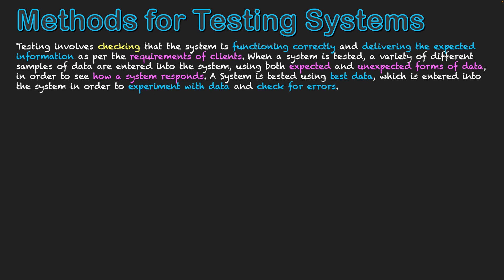We need to put mechanisms in place to avoid crashes and errors. So we're testing not just how the system copes, but also the things we put in place to prevent the system crashing. A system will be tested using test data, which is entered into a system in order to experiment with data and check for errors. Now we'll look at a variety of different types of data and tests that can be used to test systems and ensure they function correctly.